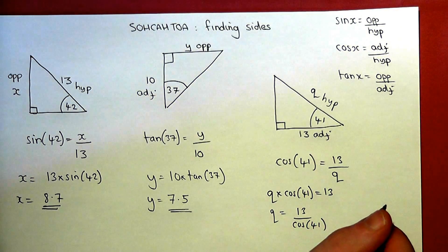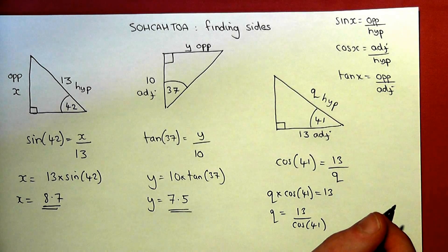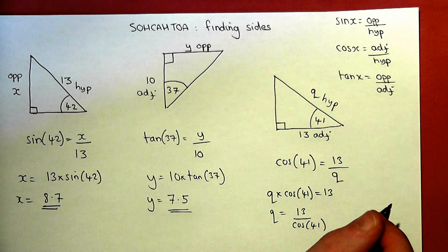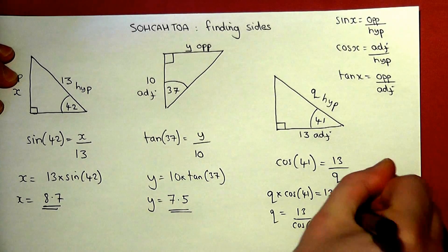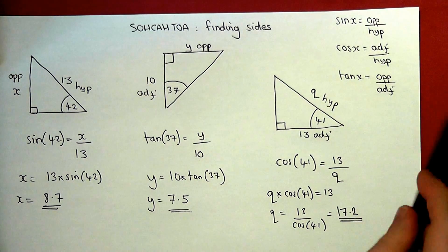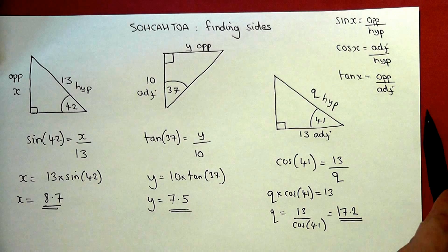So I input that into my calculator. So 13 divided by cos of 41, and I get 17.2. So q has a length of 17.2.